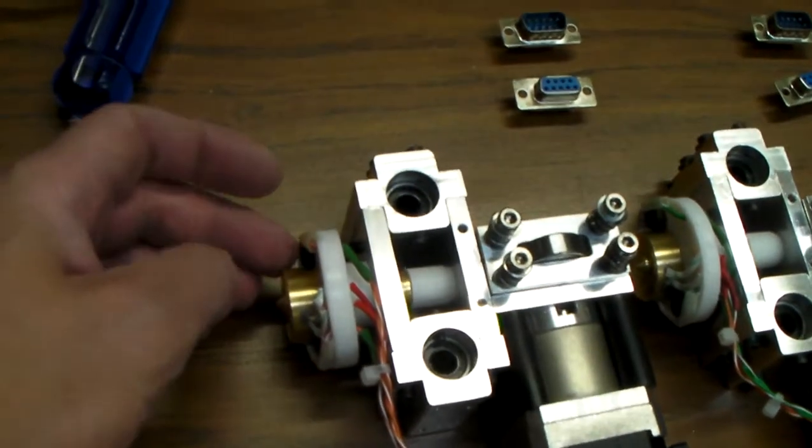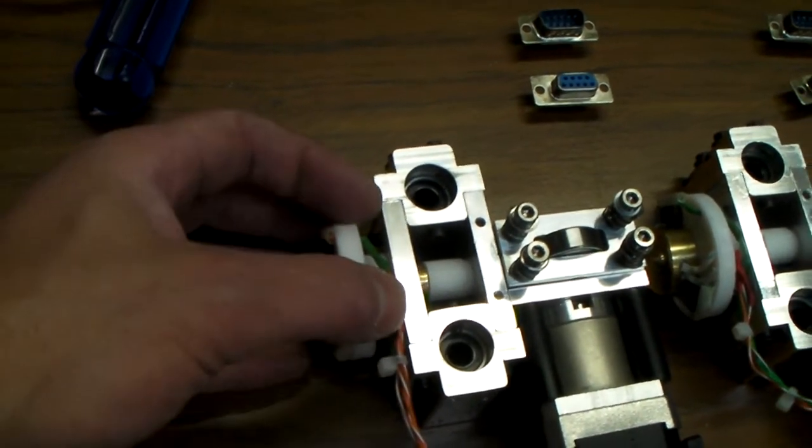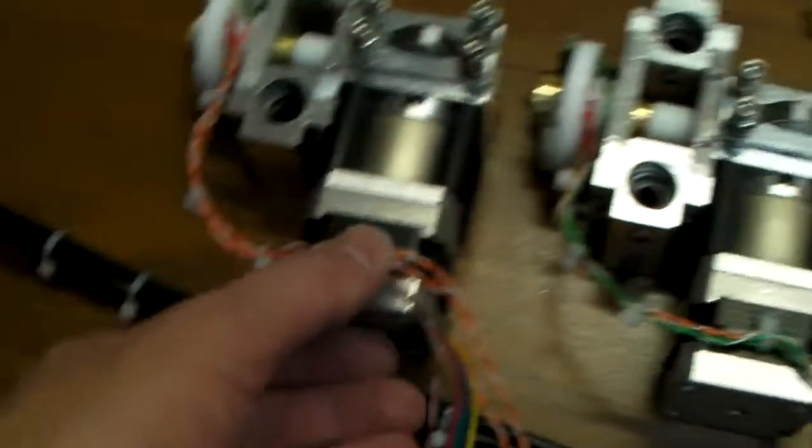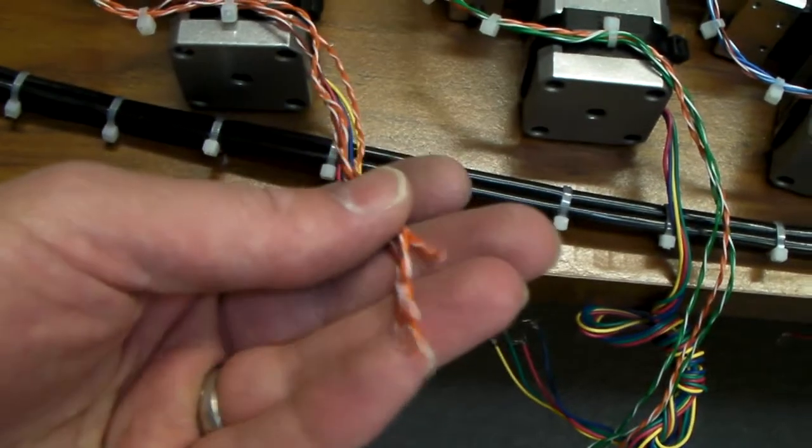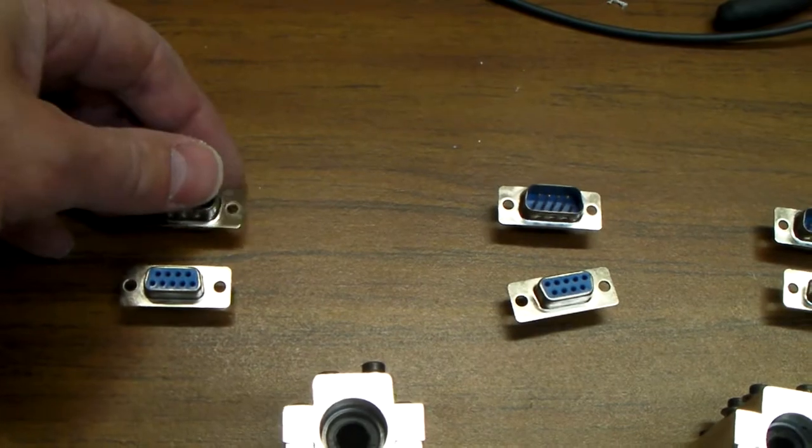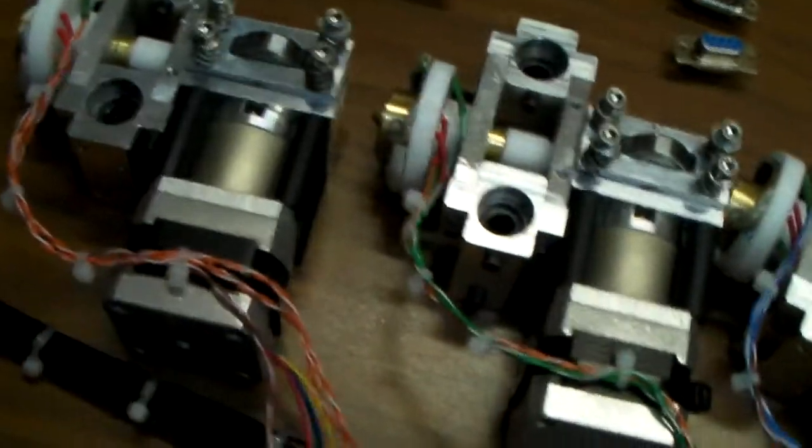So, you can easily just take these two screws out. The whole bottom just slides off. The wiring will go back to a nine-pin connector for easy removal of the tip.